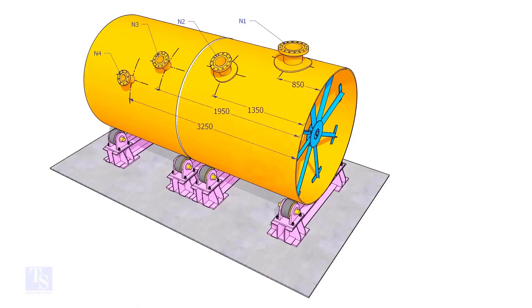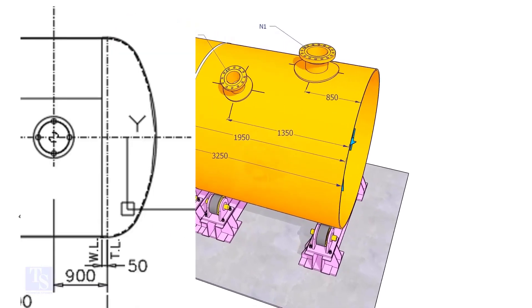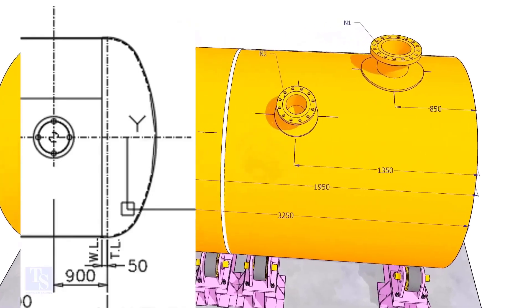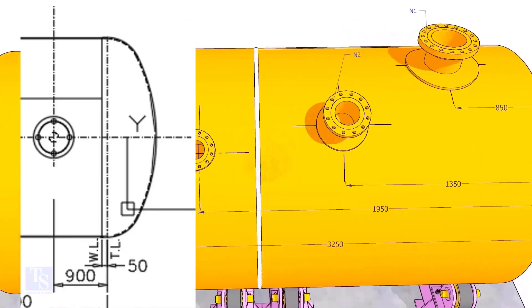Since the straight face of 50 mm is on the dish end, we need to subtract 50 mm from the overall dimension.